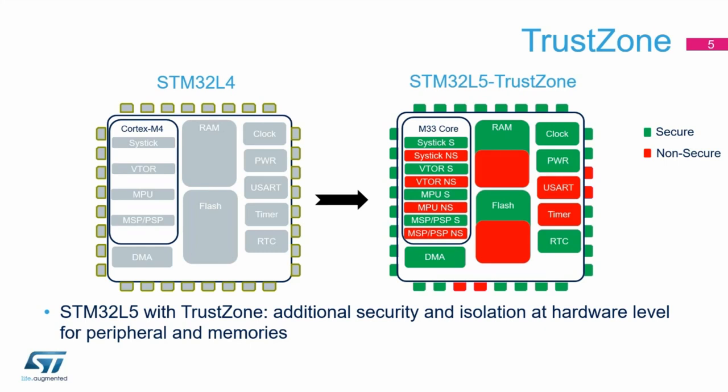On the STM32 L5 with TrustZone, the core has two SysTick instances — one secure, one non-secure — and the same duplication applies to the vector table, MPU, and stack pointers, making it essentially two states of the core. Regarding resources, the flash is split into secure and non-secure parts, the same for RAM, and each peripheral IP can be assigned to either the secure or non-secure world.